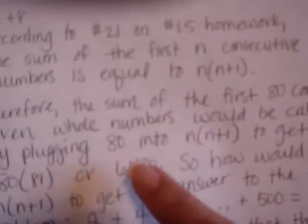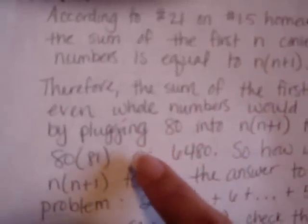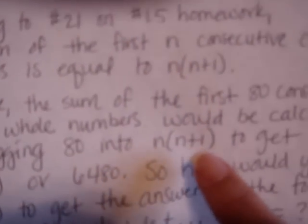So that way, if you wanted to know how to figure that out, you would calculate it by plugging in 80 into n times n plus 1 to get 80 times 81, or 6,480. So, how would you use n times n plus 1 to get the answer to the following problem? 2 plus 4 plus 6 plus all the way up to 500.